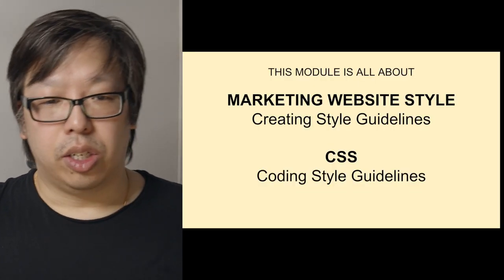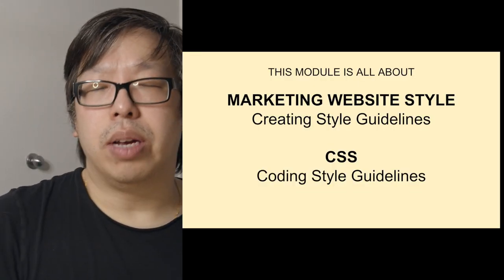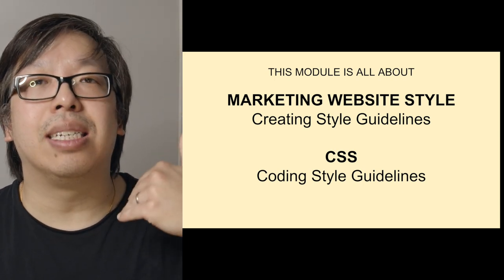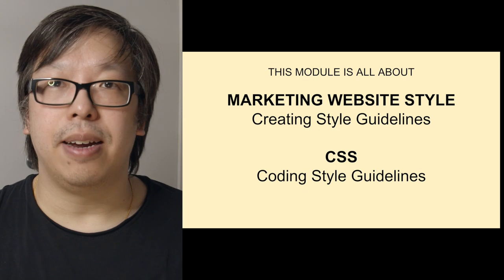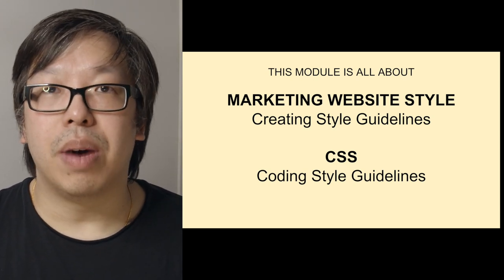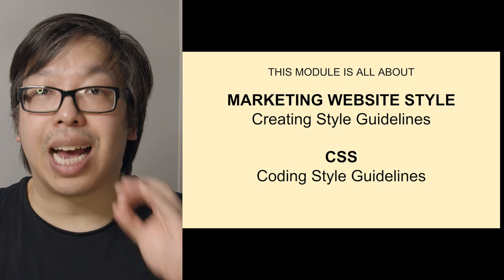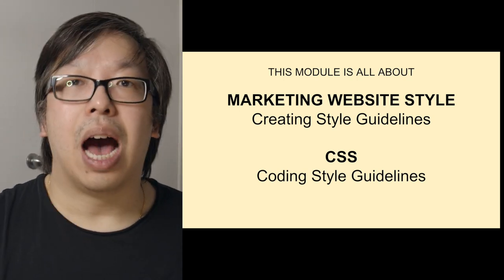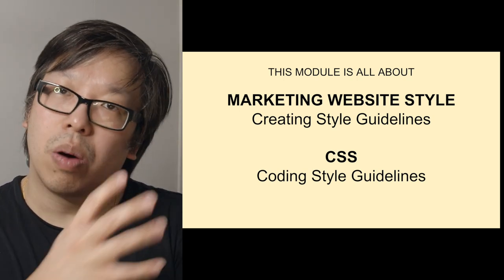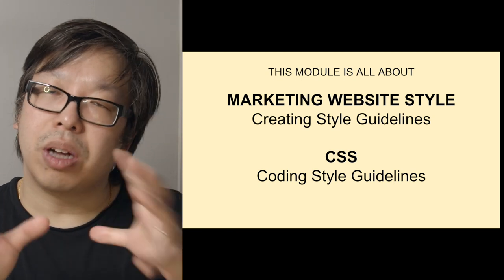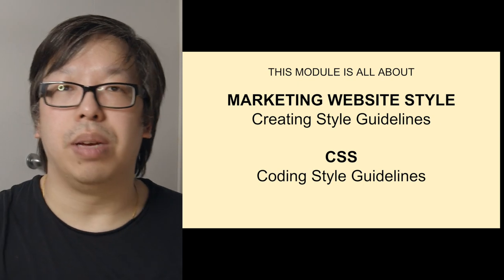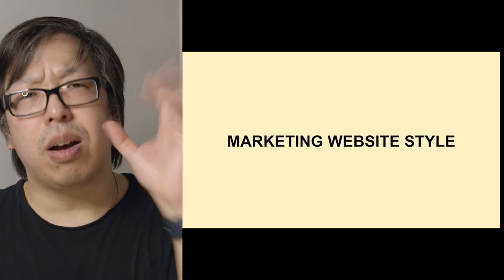Today's module has two major parts: one called styling and the second called CSS. The first part covers creating style guidelines for your website — the theoretical design piece — and the second part covers cascading style sheets and how we code that style into our website — the actual coding piece.